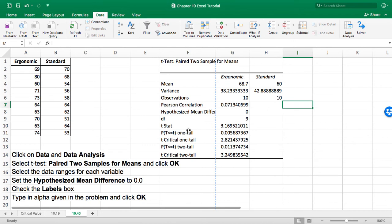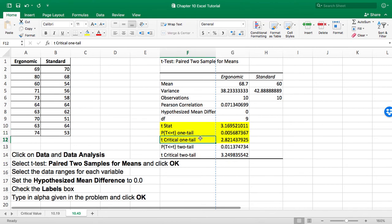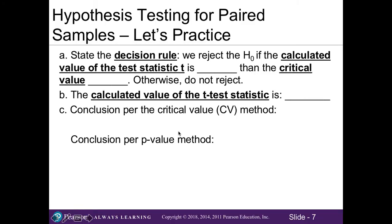Since we are working with an upper-tail test — meaning only one tail — I'm looking at the t-test statistic and the one-tail values from the Excel output. Here is the p-value and here is the critical t-value. These are the numbers we'll use to make our decision. Our decision rule states that we will reject the null if the calculated test statistic t is greater than the critical value, which Excel shows as 2.82; otherwise, we do not reject the null.